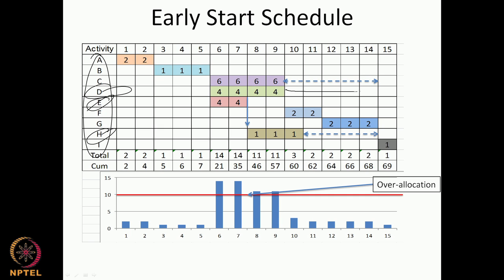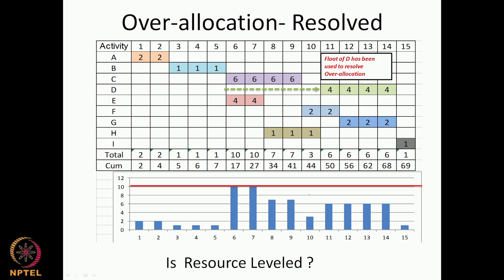We could move activity D within its float, and as H moved, G could also move to shift the resource profile. Based on these activities moving within the project duration using the float, the profile of the resources changed. In this particular case, rather than resolving overallocation, we are trying to level the resources — to make the profile as flat as possible.